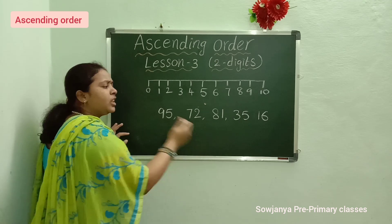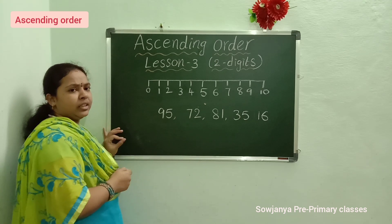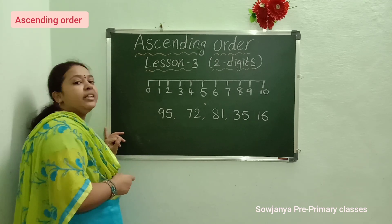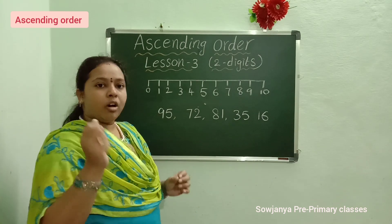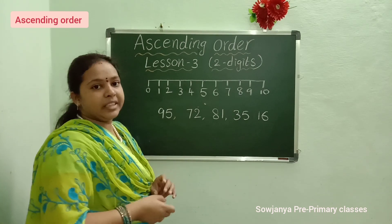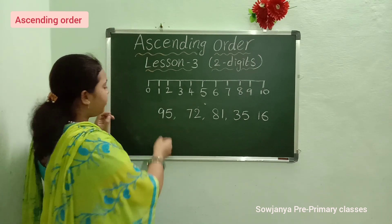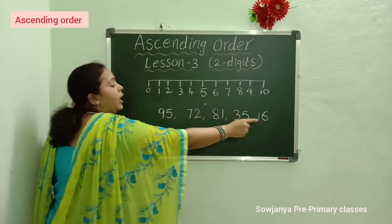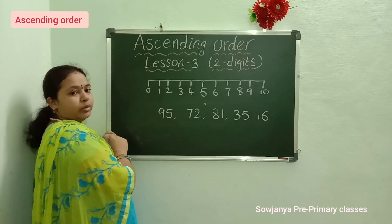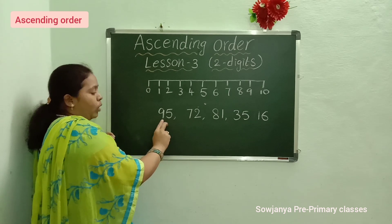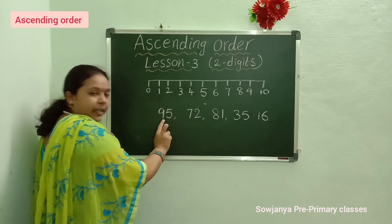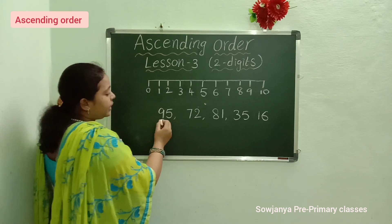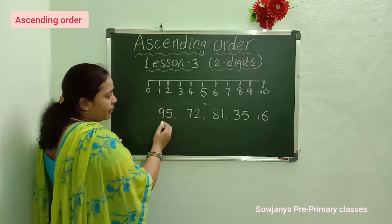Now tell me, which is the small number in this? Can you say which is the small number? I'll tell you a small logic so you can do it easily. Here we have all 2-digit numbers. So what we have to see? The 1's place and 10's place. First we will observe the 10's place. In the 10's place, what numbers are there?